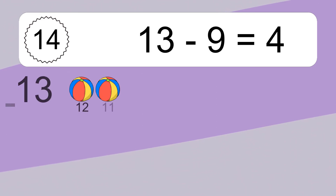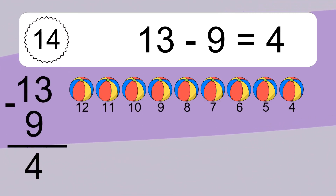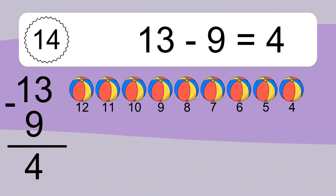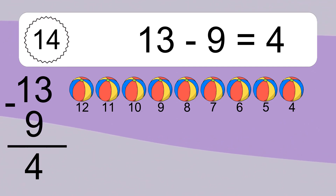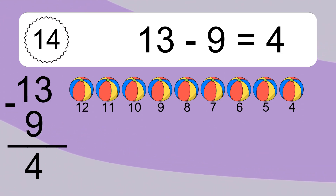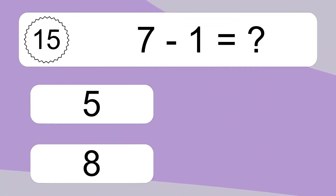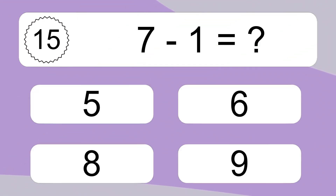13 minus 9 equals what? 13 minus 9 equals 4. Let's count it: 12, 11, 10, 9, 8, 7, 6, 5, 4.